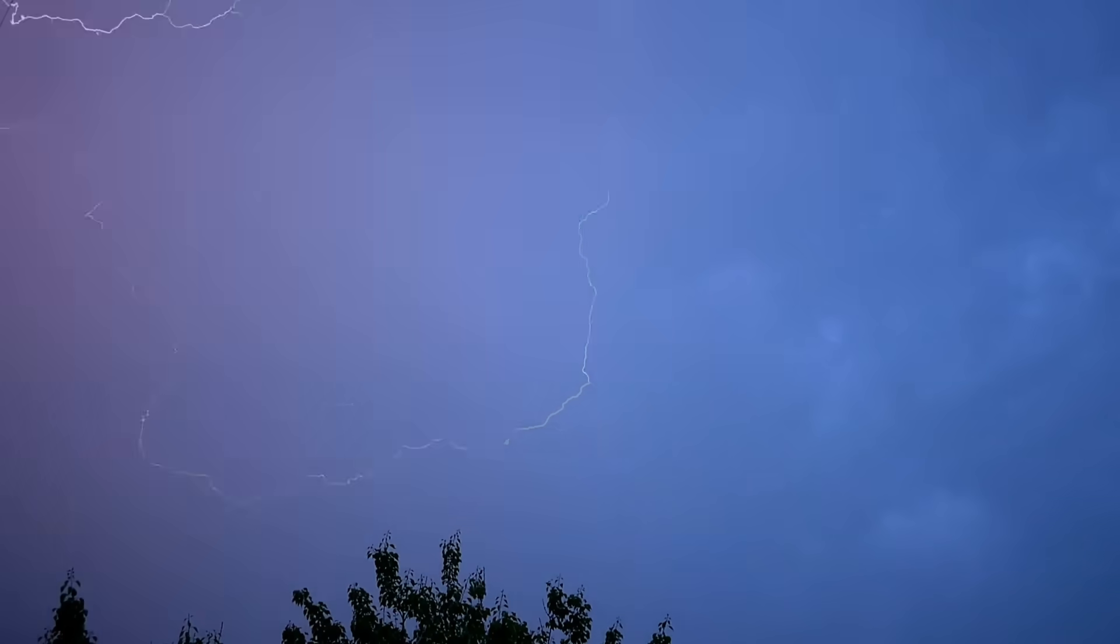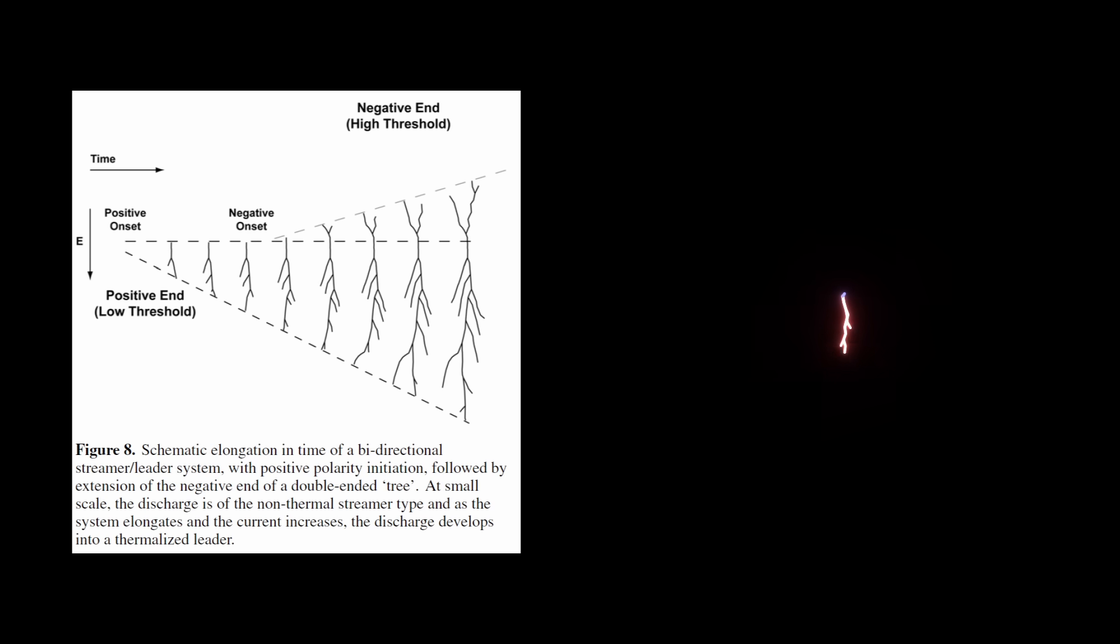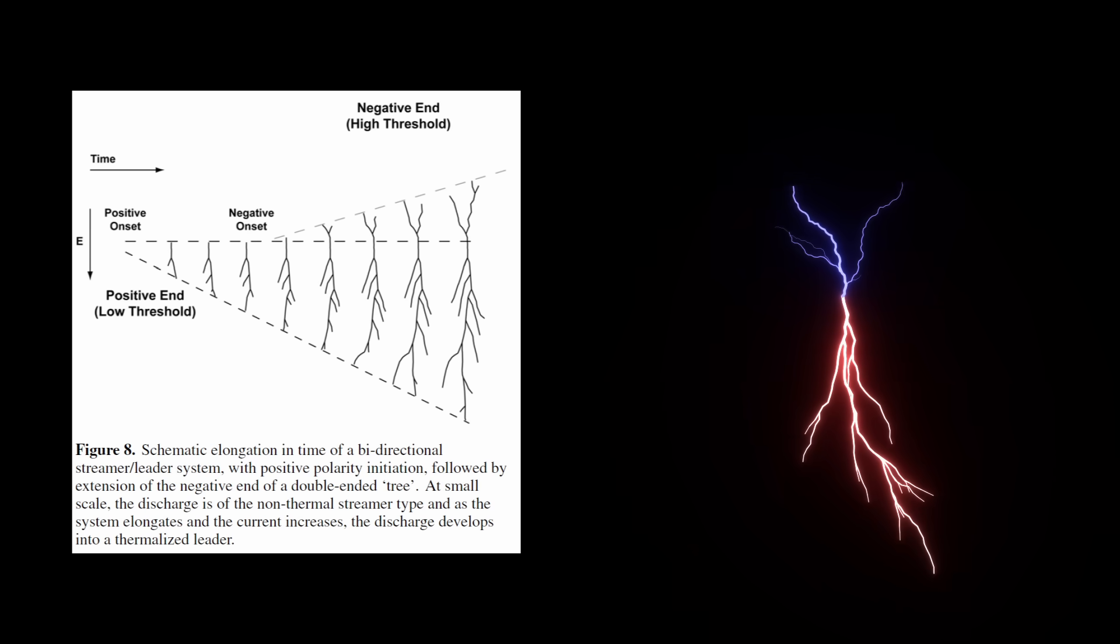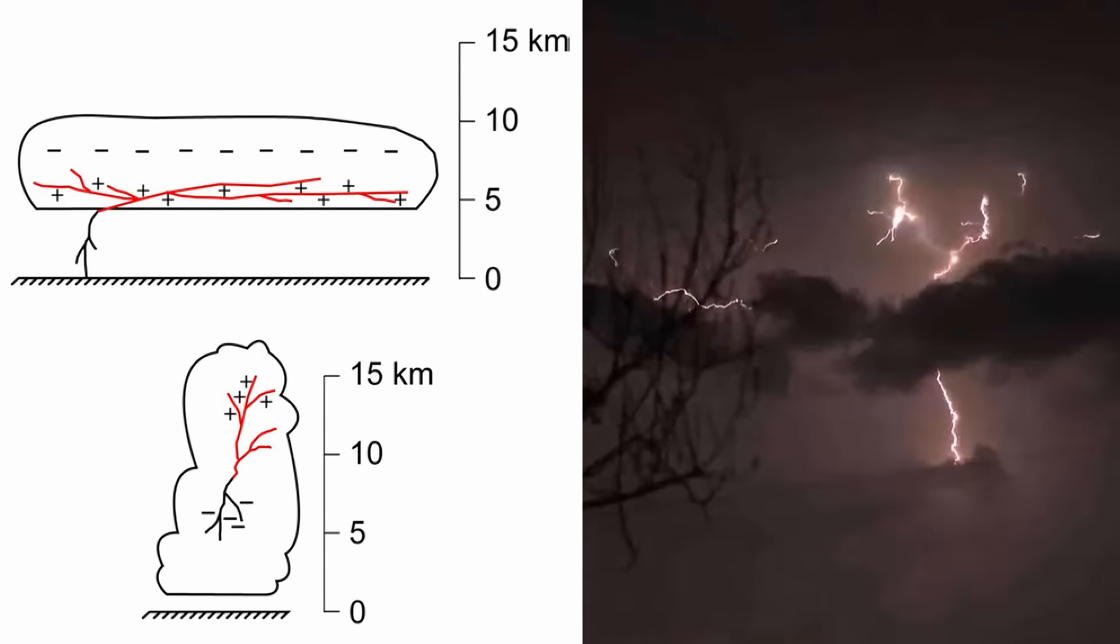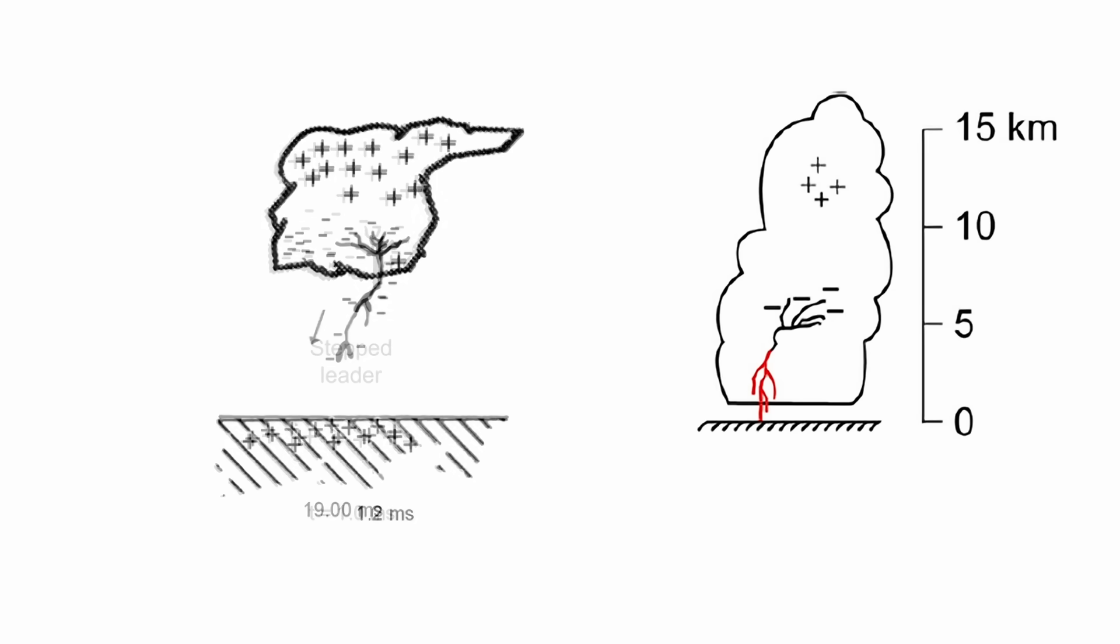A perfect example of this can be found right here on Earth. Lightning is often thought of as a simple strike of electricity from the cloud to the ground. But in reality, it's far more complex. Before a lightning bolt even forms, the electric field begins to carve channels through the air. These channels fork and branch in opposite directions. One branch reaches down towards the ground, while another extends upward into the clouds. Together, they create a connected pathway that allows the full discharge to flow.